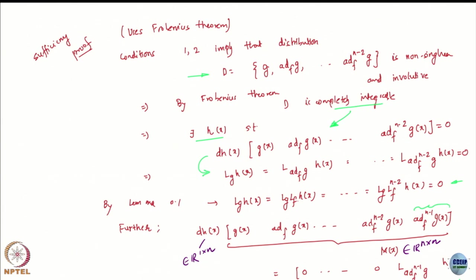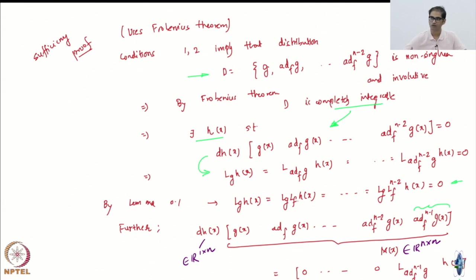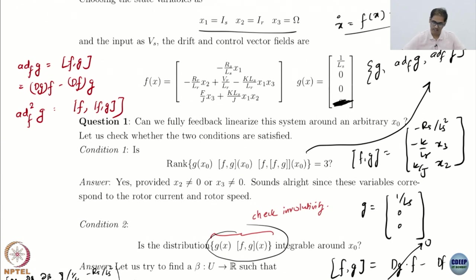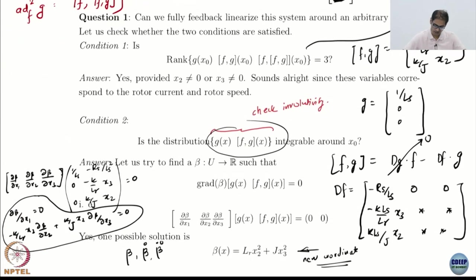We did a little bit of the proofs. I of course did not prove the key result — I left it for you to read, or we can discuss it. We looked at the key applications of the Frobenius theorem, which essentially says that involutivity and complete integrability of this distribution are equivalent. For the fully feedback linearizable case it gives us a very nice set of partial differential equations so that you can actually identify this control.